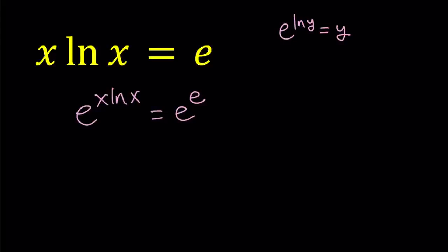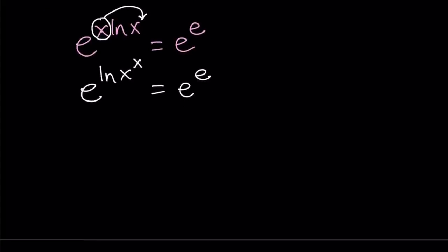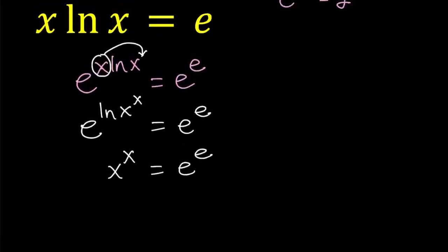But before we do that, we don't have e to the power ln something — we have an x here. So how do you get rid of that problem? You can move the x so it becomes an exponent. We can write this as e to the power ln x to the power x equals e to the power e. And e to the power ln x to the power x is the same as x to the power x, as long as x is positive.